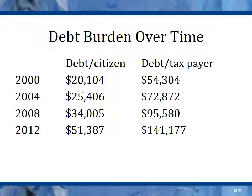Debt burden over time: the debt is increasing dramatically. Debt per citizen is a little over $52,000 per person in 2013. The debt per taxpayer — with fewer and fewer people paying taxes — has gone up dramatically to more than $142,000 per taxpayer. That's it for Chapter 12. We'll come back for Chapter 13 next week.